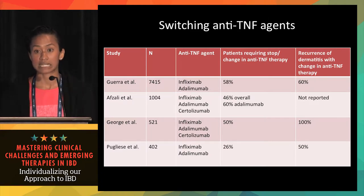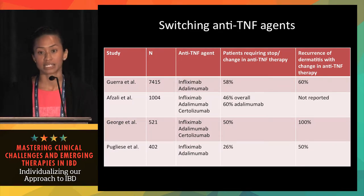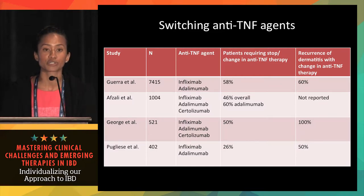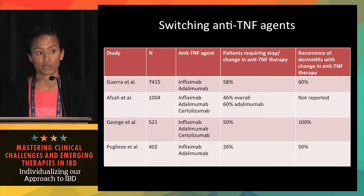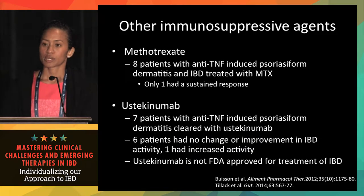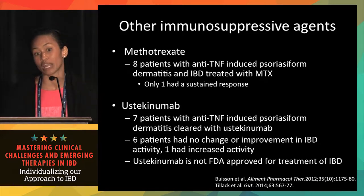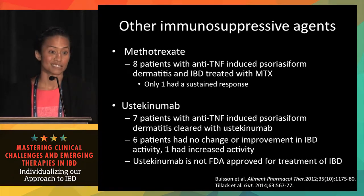The data suggest that psoriasiform dermatitis is really a class effect. Going back to those four studies, anywhere from 26 to 60% of patients had to stop or change their anti-TNF therapy because of psoriasiform dermatitis. Of those retried on a new anti-TNF agent, 50 to 100% developed the psoriasiform dermatitis again. As for methotrexate, anecdotally it helps, but there is no good evidence one way or the other that it is necessarily useful.